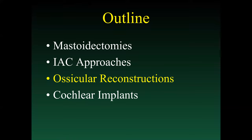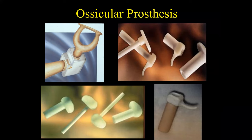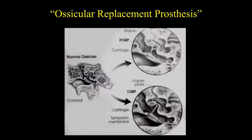Next we'll discuss ossicular reconstructions. Ossicular reconstructions are performed to recreate the normal ossicular chain, which runs from the tympanic membrane to the oval window — malleus, incus, and stapes. Any process that disrupts that mechanical chain requires some way to recreate it. The normal ossicles go from the tympanic membrane all the way into the oval window. The two primary types of ossicular replacements are the PORP — partial ossicular replacement prosthesis — and the TORP — total ossicular replacement prosthesis.